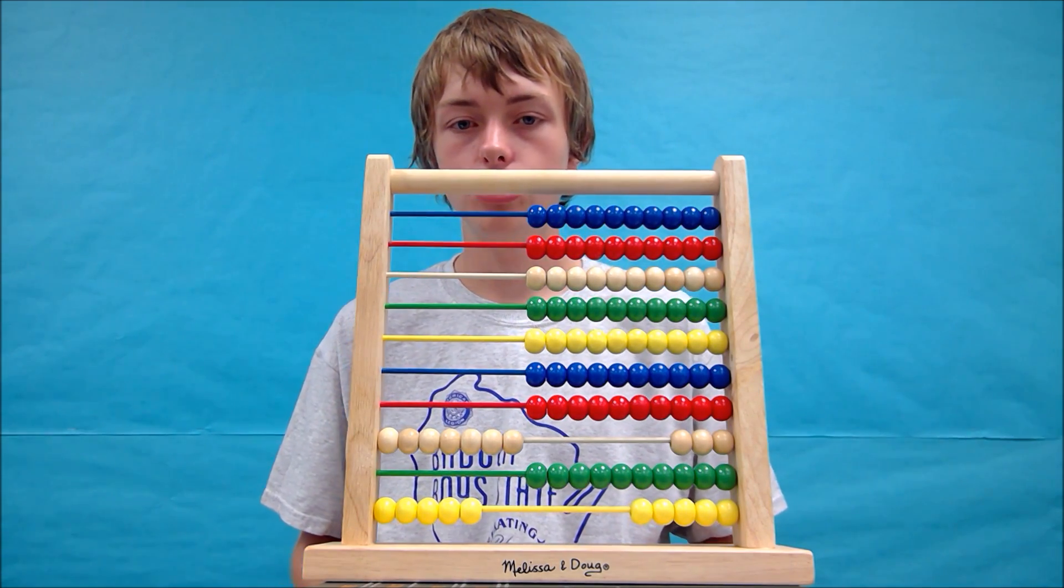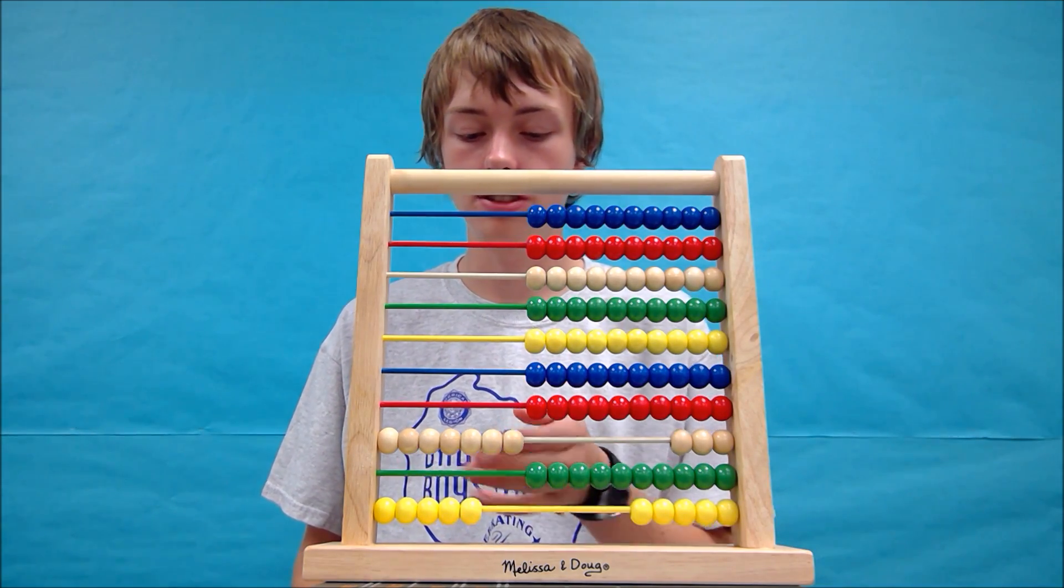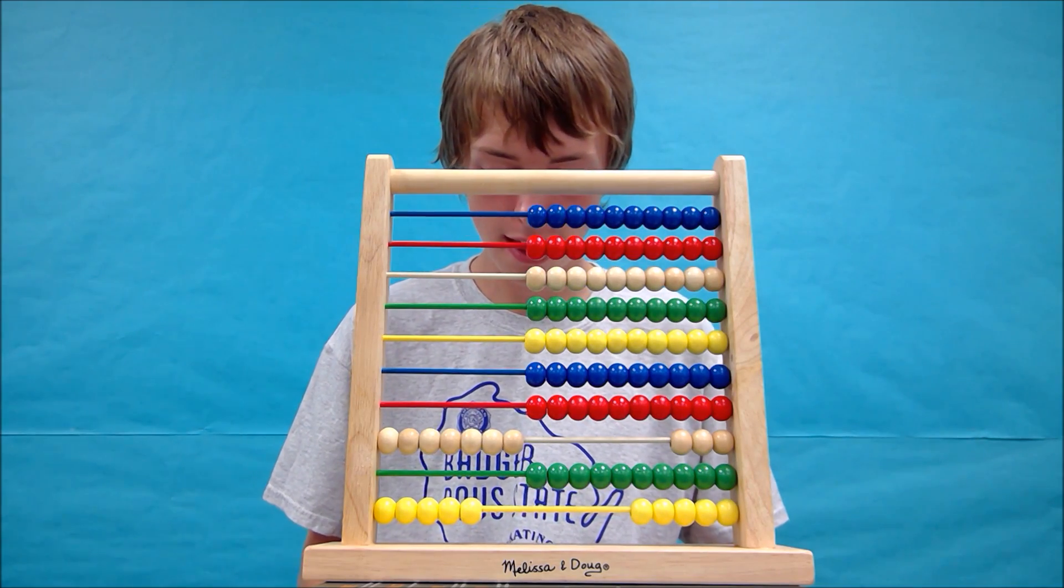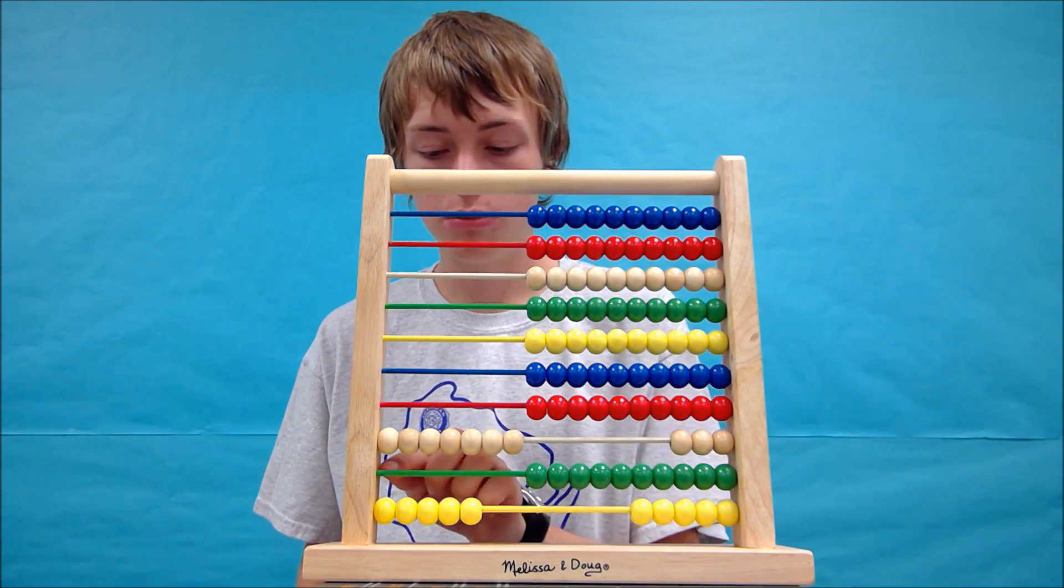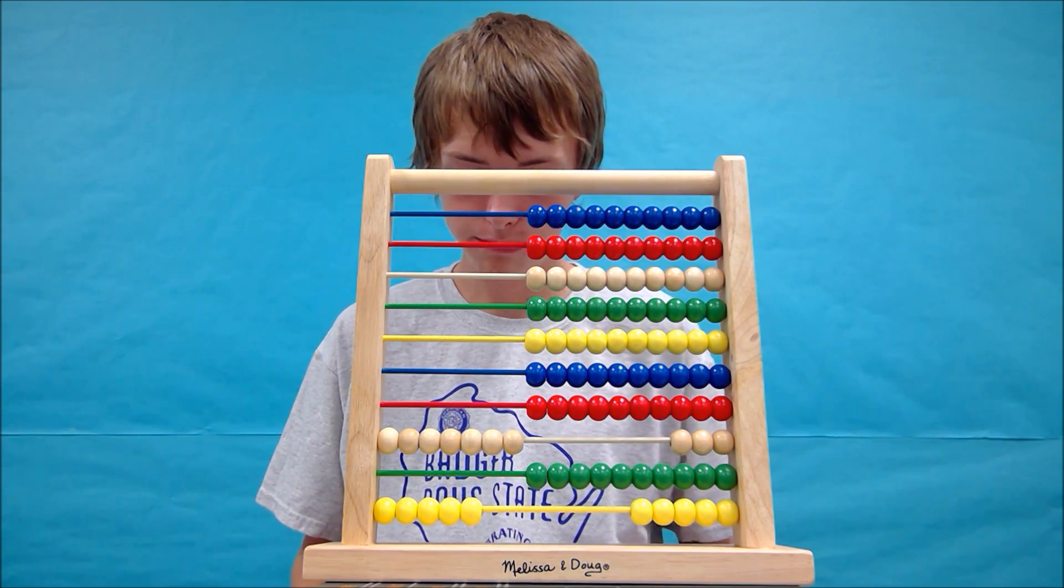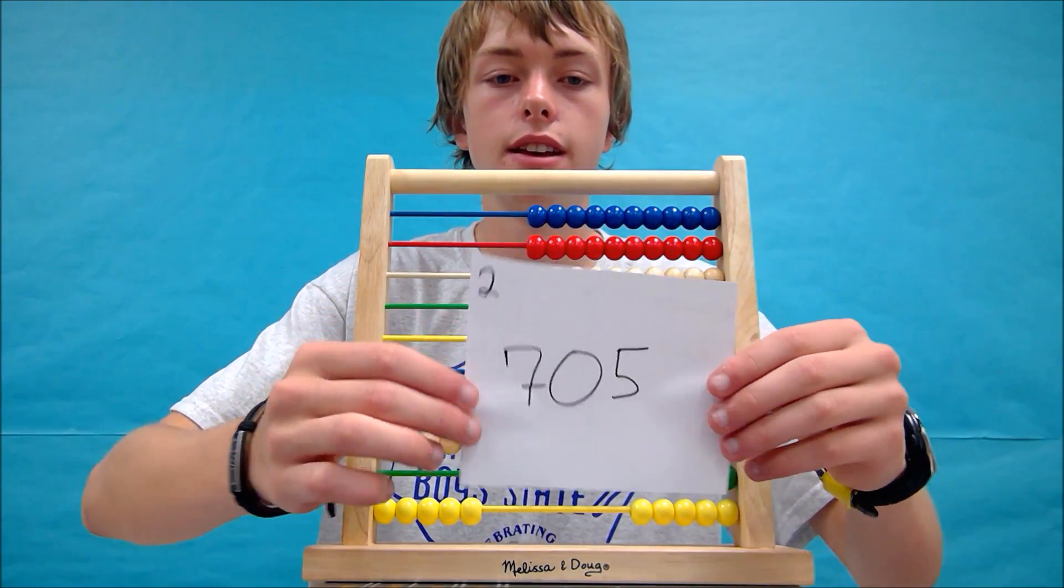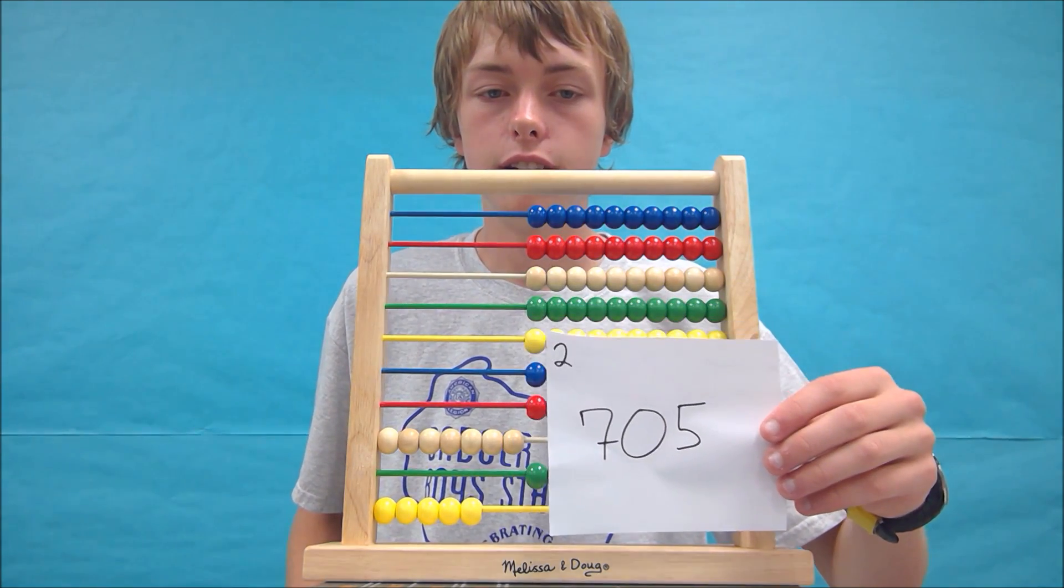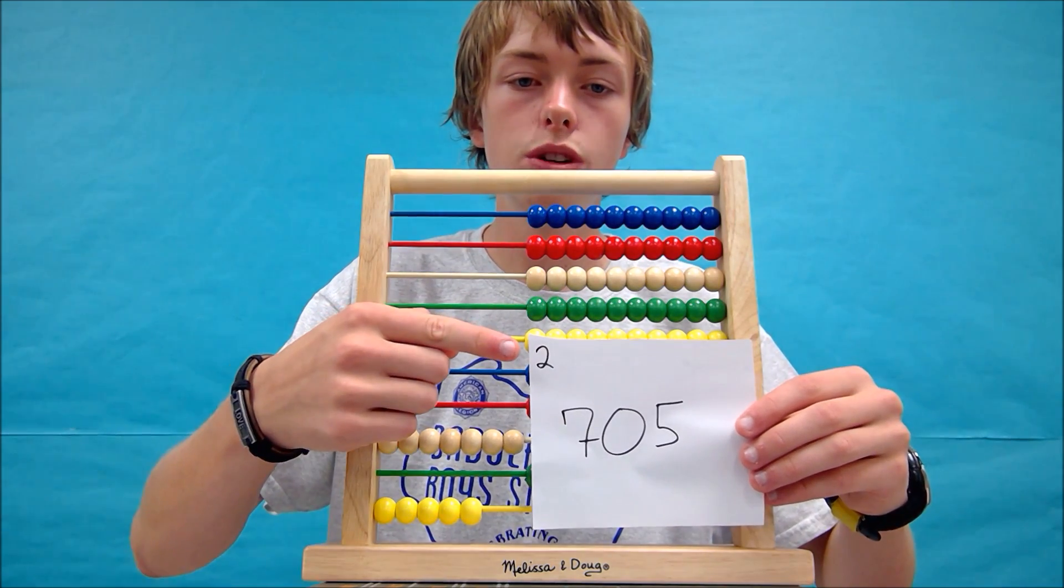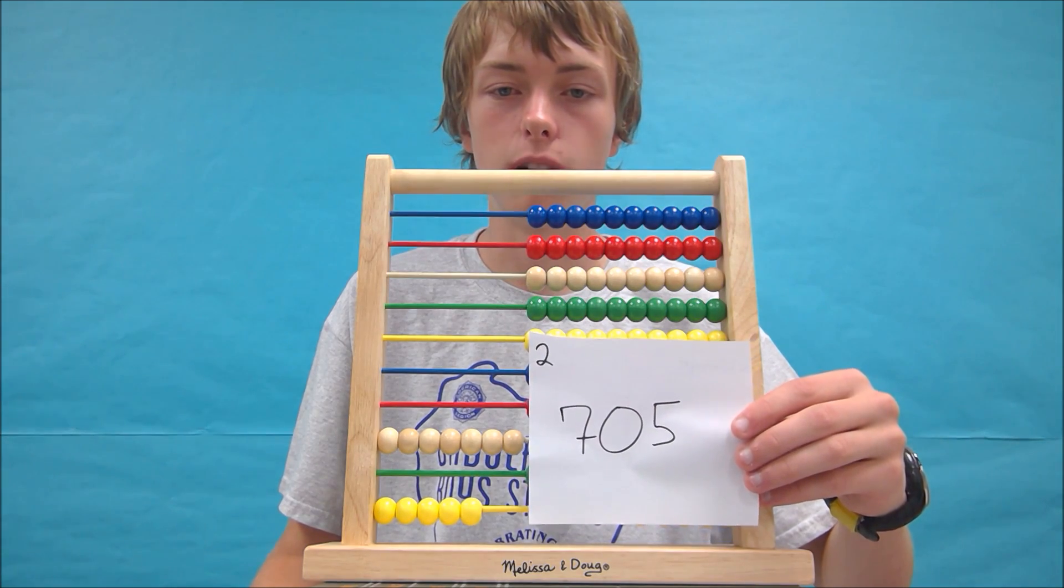Now this one's a little tricky to write down. So I will write it down. 2, 4, 6, 7. Since there are 0 green beads, we will write 0 as a placeholder. And 2, 4, 5. Our answer then would be 705. Your abacus should look something like this. And the 2 is my notes. If you need notes, you can write them down on the sheet of paper as well.